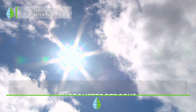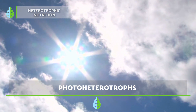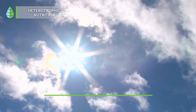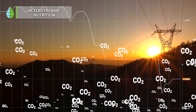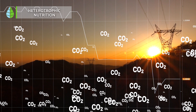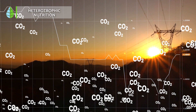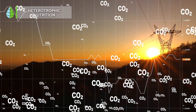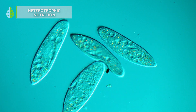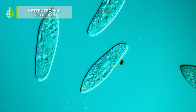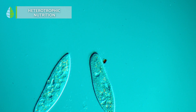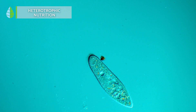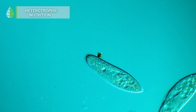Photoheterotrophs are organisms that derive their energy from sunlight but require organic compounds as a carbon source for growth and development. Unlike photo-autotrophic organisms, photo-heterotrophic organisms cannot synthesize their own organic compounds and must obtain them from external sources. This is the case of certain species of bacteria.